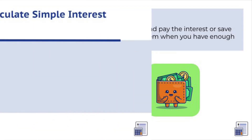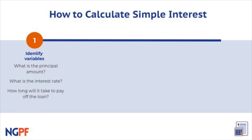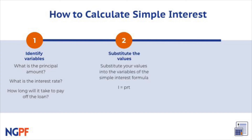Let's review how to calculate simple interest. First, you can identify your variables, like the principal, interest rate, and time. Then, you can substitute these values into the simple interest formula. Lastly, you can multiply all of them together to get to your final answer.